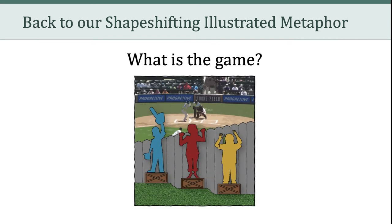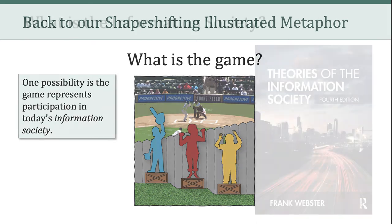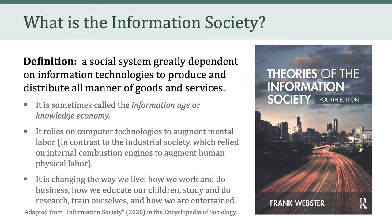I want to come back to our shape-shifting illustrated metaphor and ask: what is the game? Many of you wrestled with this in your critical reflections, and the more we think about this metaphor, the more complicated it becomes — that's why I jokingly refer to it as a shape-shifting metaphor. What I want to posit is that the game represents participation in today's information society. The information society has been defined as a social system greatly dependent on information technologies to produce and distribute all manner of goods and services — sometimes called the information age or the knowledge economy.